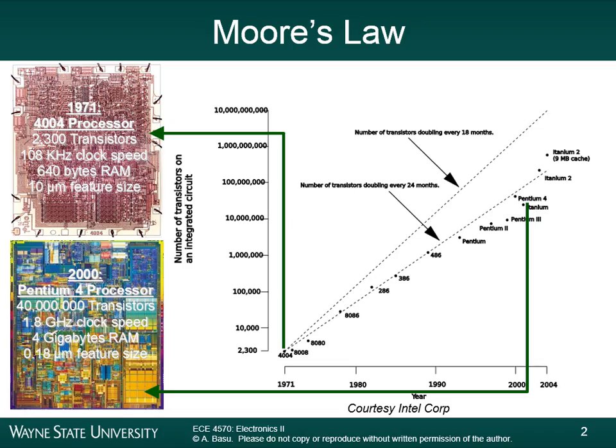The size of the chip hasn't really changed that much — they go into your phones, your computer chips, your PCs and so on. But the fact is we can cram more and more transistors into a small area, and the more transistors you can have, the more complex computation you can do.